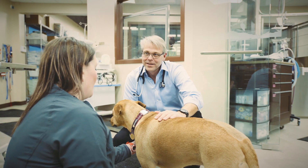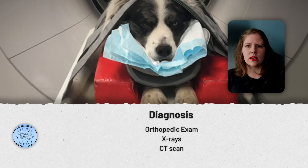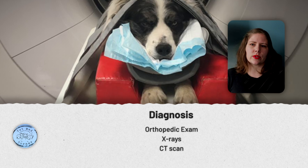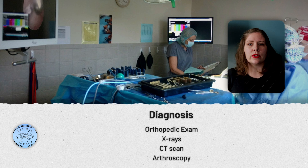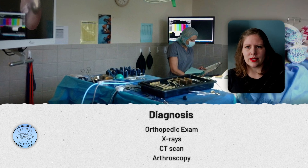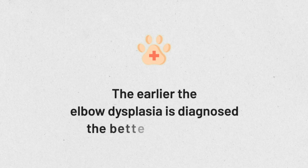Sometimes an x-ray is not sensitive enough to pick up on the changes in the elbow joint, and depending on what we see, the next step may be to refer you to an orthopedic specialist. They may recommend a CT scan to get more information about the elbow joint, or sometimes we will use arthroscopy — putting a small camera surgically into the joint — to get a full clinical picture of what's going on inside that elbow. It is absolutely important to remember that the earlier we diagnose this, the better the long-term outcome, especially if we can intervene before any significant arthritis formation has occurred.